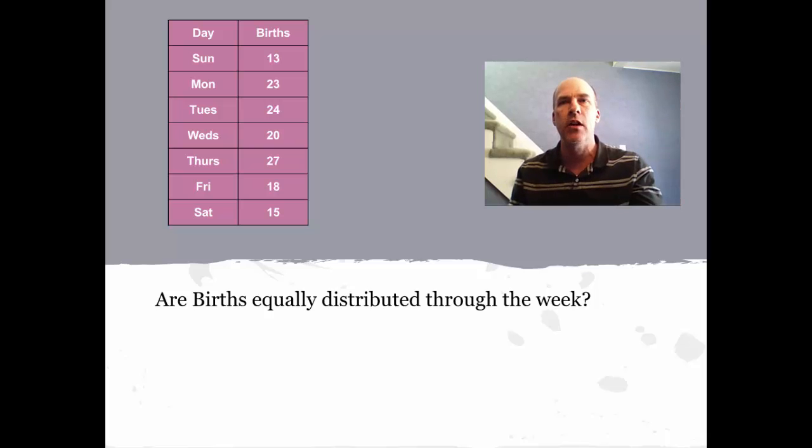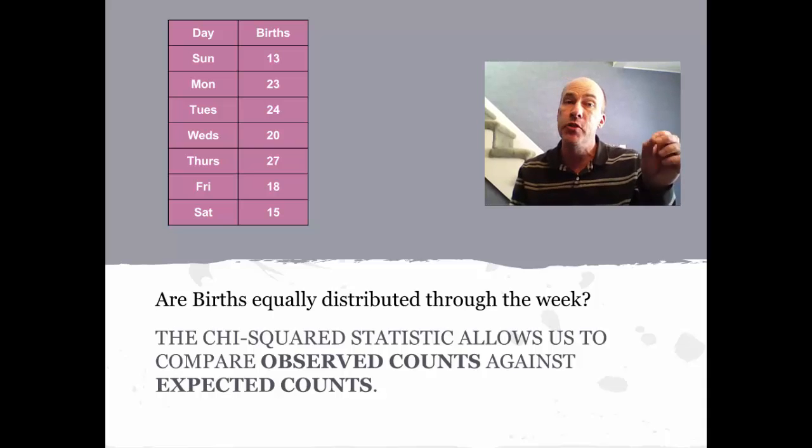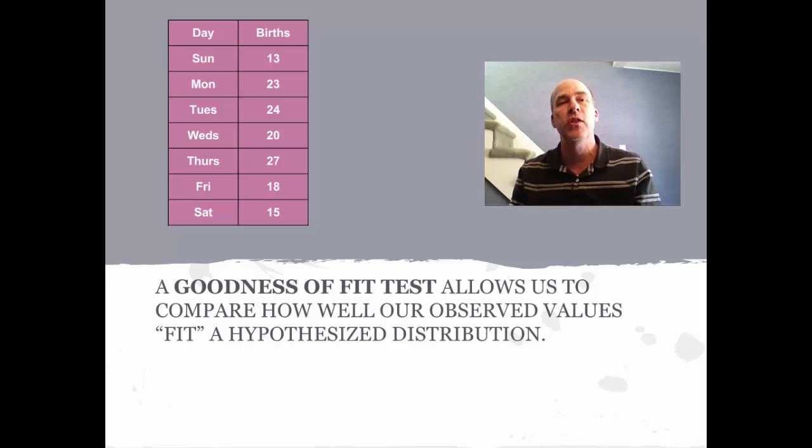We're going to compare the births we have here to what we'd expect to get if the dates were equally distributed. The chi-squared statistic allows us to compare observed counts against expected counts. The type of test we're going to do is a goodness of fit test that allows us to compare how well these observed values fit a hypothesized distribution.